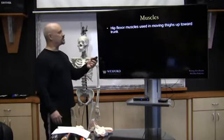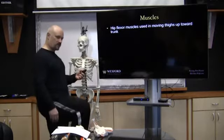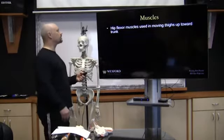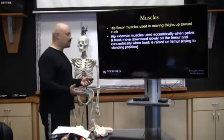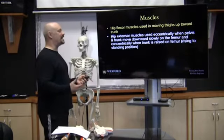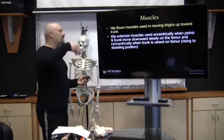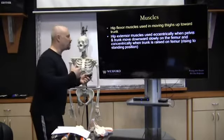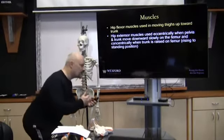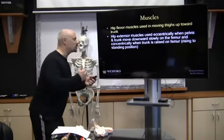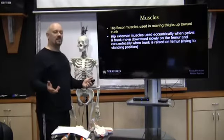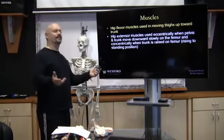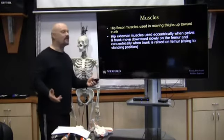The hip flexors are used in moving the thighs toward the trunk. The hip extensor muscles are used eccentrically when the pelvis and trunk are moving downward slowly on the femur, and will be concentrically used when the trunk is raised on the femur into a standing position. Basically, it's a squat.